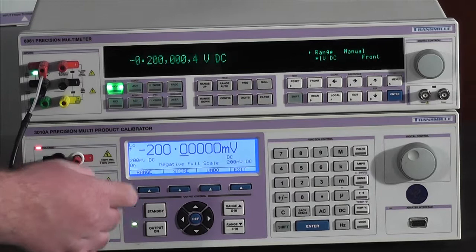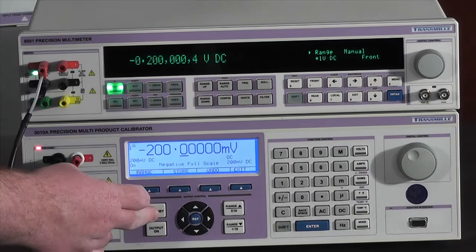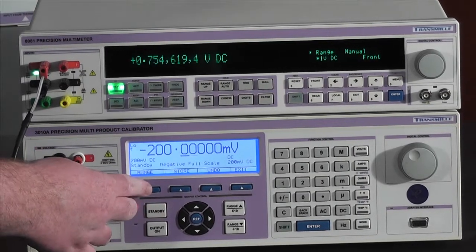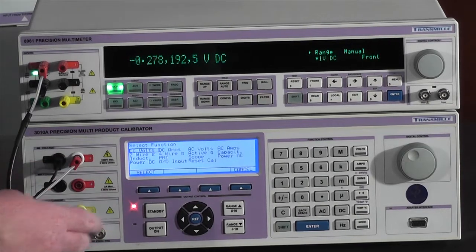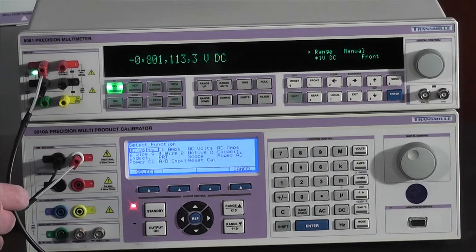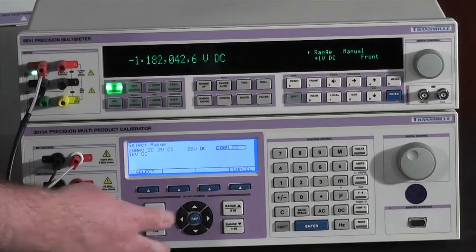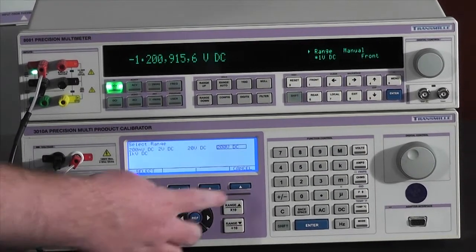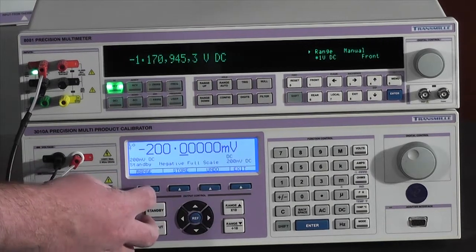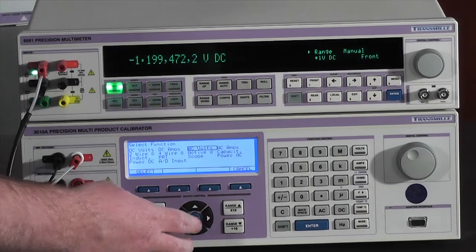Now that we have adjusted the 200 millivolt range, we can press standby and press the range key. This will then take us back to the calibration menu, where we can either further proceed with more adjustments in the DC voltage or adjust other ranges.